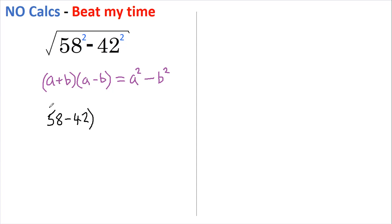multiplied by 58 plus 42 within the square root sign. 58 minus 42 is 16 multiplied by 58 plus 42, which is 100. Square rooted: the square root of 16 is 4, the square root